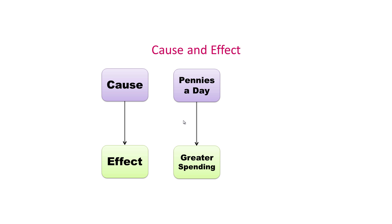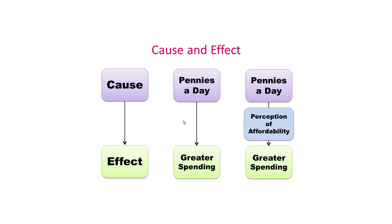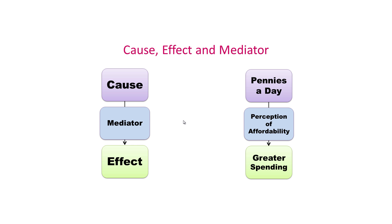Let's focus a minute on the pennies a day concept. The idea is that framing a particular price as a pennies a day expense — say a dollar a day — increases the likelihood that people will spend on that product or service. John Goldville's work suggested that framing a price this way increases the perception of affordability, thereby resulting in greater spending. This intermediate variable between the cause and the effect is called a mediating variable. The cause results in a mediator, which in turn results in the effect: pennies a day changes the perception of affordability, which itself results in greater spending.